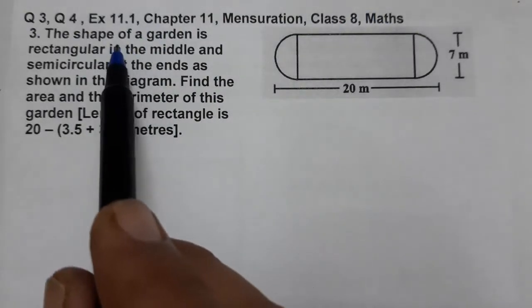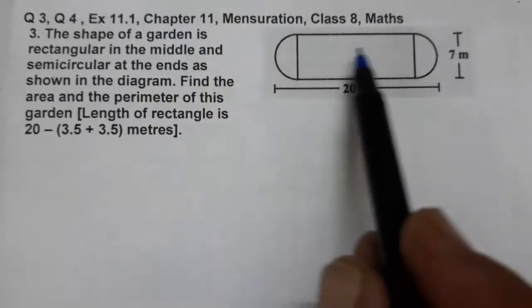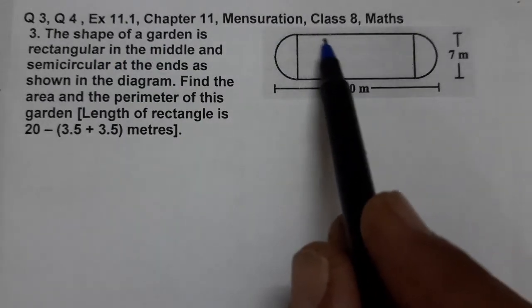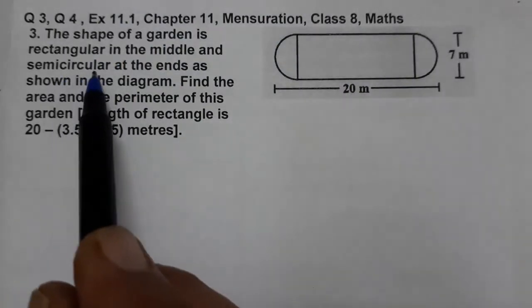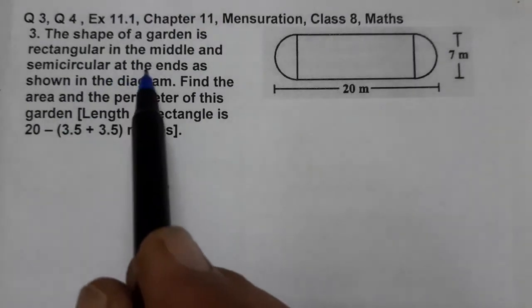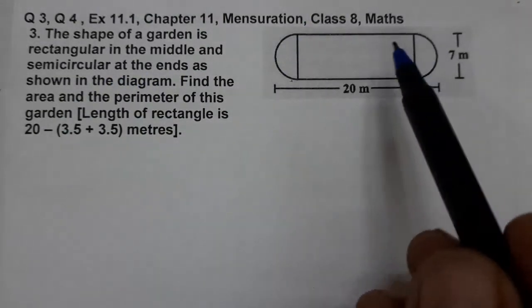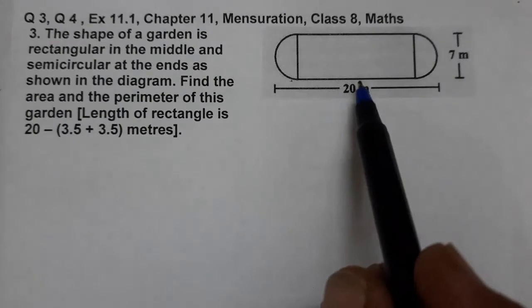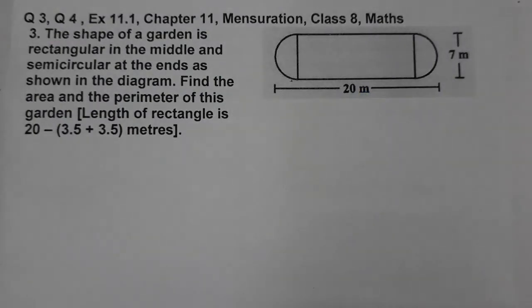The shape of a garden is rectangular in the middle and semi-circular at the ends. There are two semi-circular ends, one on each side. We need to find the area and perimeter.